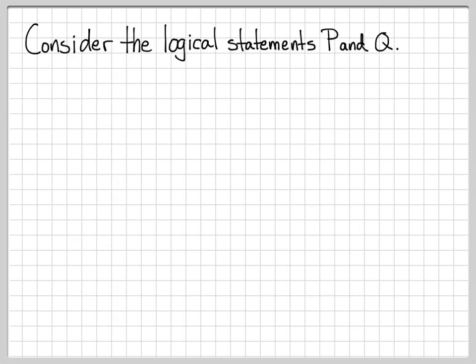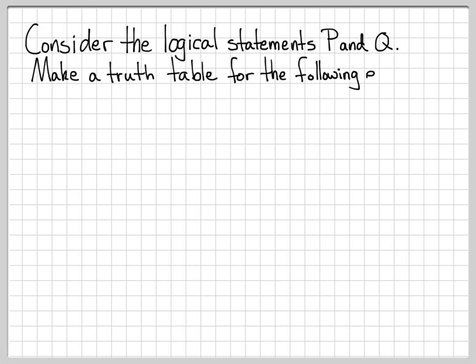In this example, we're going to construct a truth table for a logical expression that involves the logical statements P and Q. We're going to make a truth table for two different expressions. The first one is the logical expression 'not P and Q'. So this is what we want to make a truth table for.